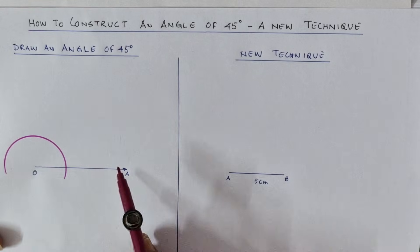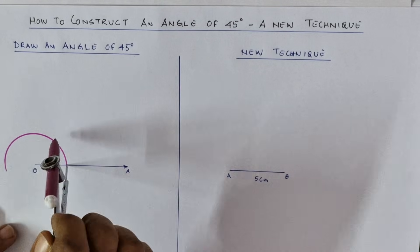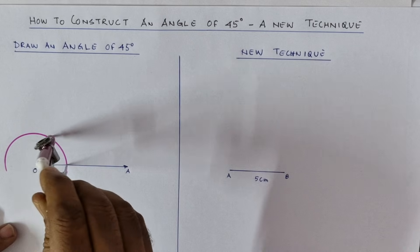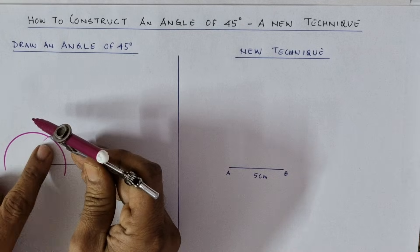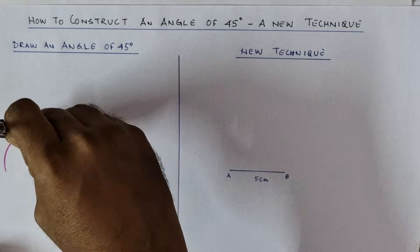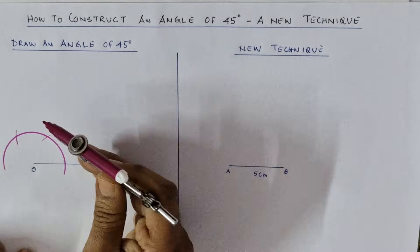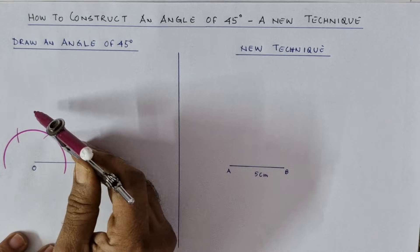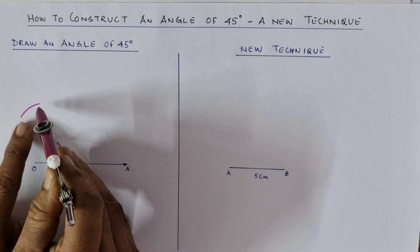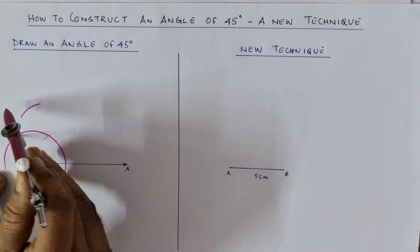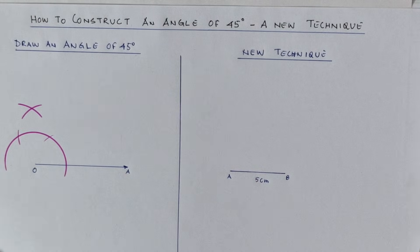Mark the intersection point. Without changing the radius, draw another arc intersecting the main arc. Then point the needle to this intersection point and draw another arc intersecting the second arc. Now you have two arcs intersecting the main arc. Point the needle to the first intersection and draw two intersecting arcs; then point to the second intersection and draw another arc forming an intersection.